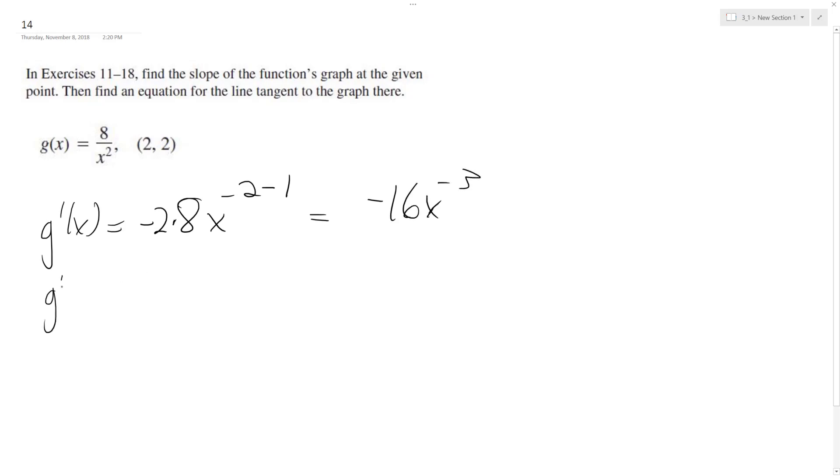So g prime of x, or g prime at point 2, is going to be equal to negative 16. And the thing you got to be careful about here is this is x cubed. It's under negative 16. So this is negative 16 over 8, which is equal to negative 2.